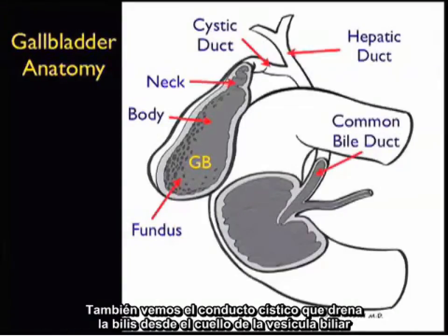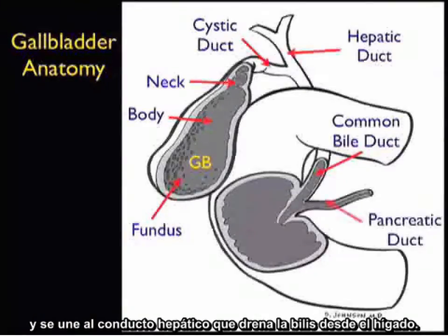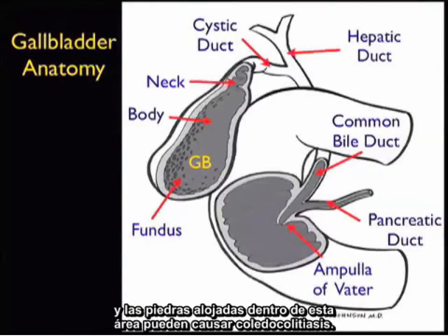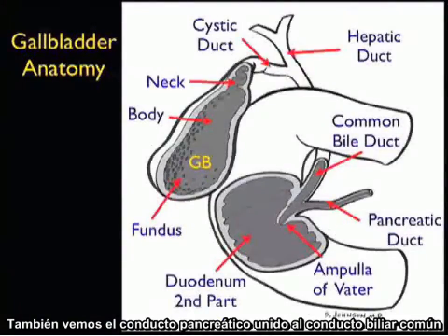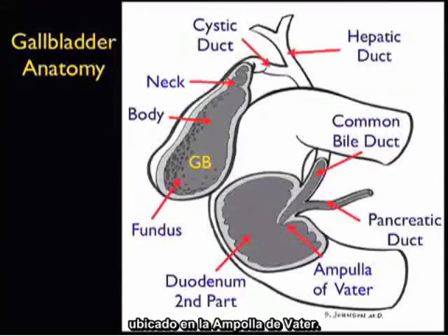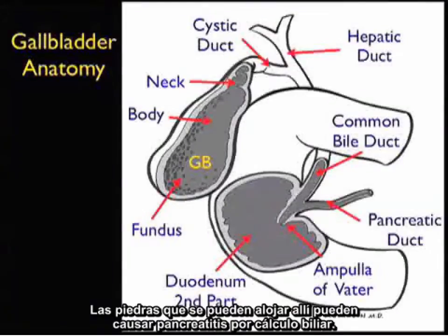We also see the cystic duct draining bile from the neck of the gallbladder and joining the hepatic duct, which drains bile from the liver. The confluence of the cystic duct and hepatic duct forms the common bile duct, and stones lodged here can cause choledocholithiasis. We also see the pancreatic duct joining the common bile duct and emptying into the duodenum at the ampulla of Vater. Stones lodging there can cause gallstone pancreatitis.